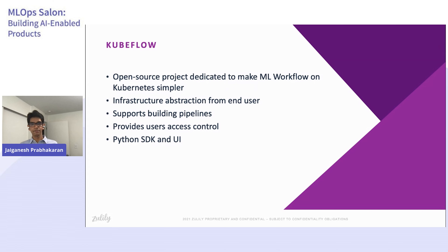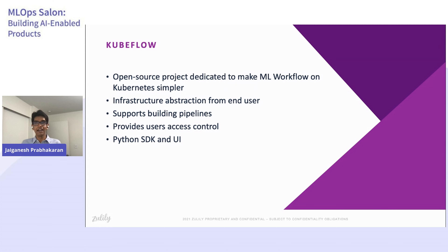Kubeflow also supports building pipelines — it allows users to build an end-to-end machine learning pipeline using the Kubeflow pipeline framework. Kubeflow provides user access control, and it was very simple for us to integrate with our internal identity management system. It allowed us to create service accounts for individual users and provide data access and resource access selectively. Kubeflow comes with a Python SDK that allows you to dockerize code with minimal effort, run hyperparameter jobs, and create pipelines. It removes a lot of boilerplate code for data scientists and has a very rich and easy-to-use UI.